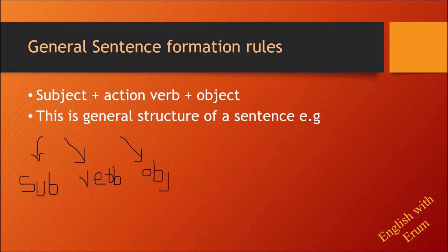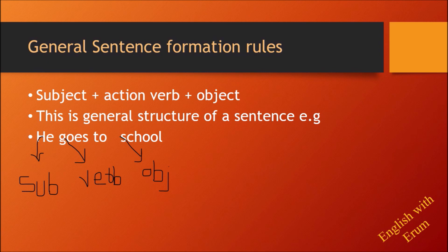We have general sentence formation rules. In general sentence formation, the structure is: subject plus action verb plus object. For example, 'He goes to school.' Here 'he' is the subject, 'go' is the action verb, and 'school' is the object. This subject plus action verb plus object structure is our general rule.